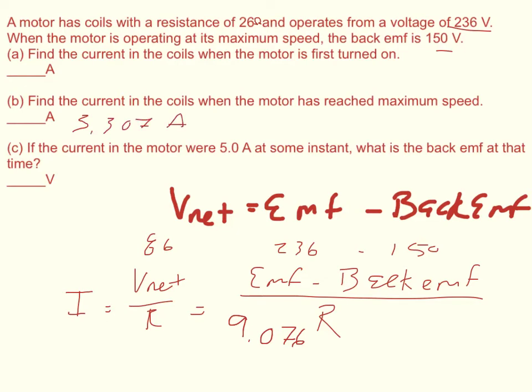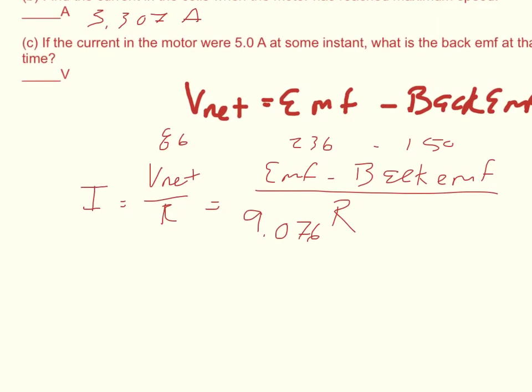And then it says if the current at some time were 5 amps. So if the current at some time were 5 amps, so I equals 5, what is the back EMF at that time? So I have I equals EMF minus back EMF divided by R.